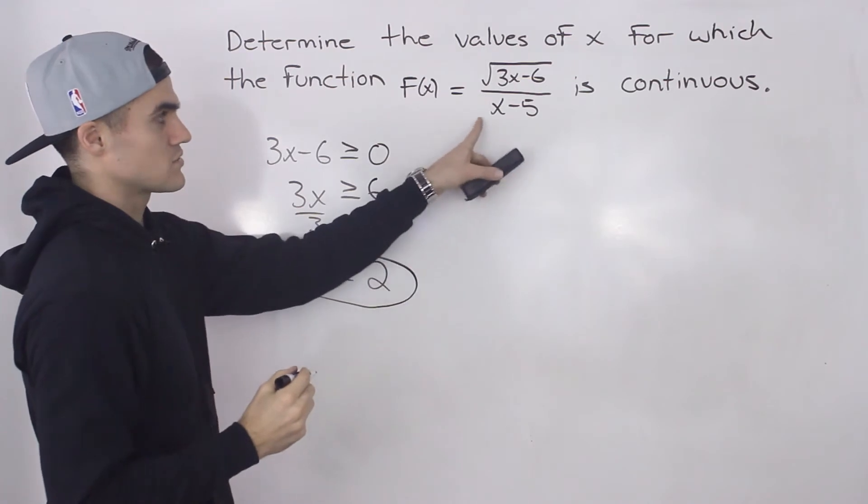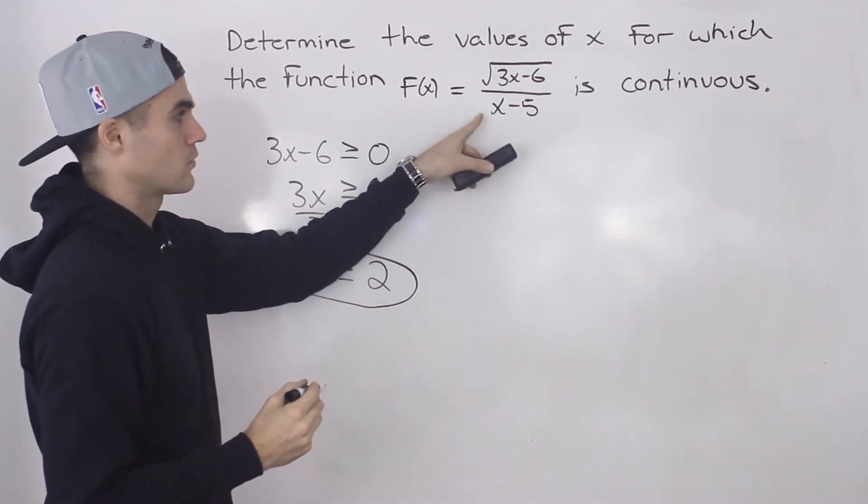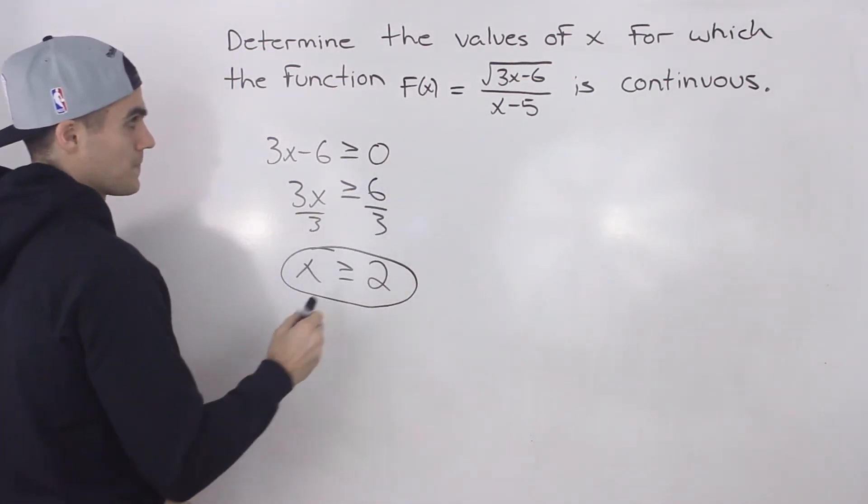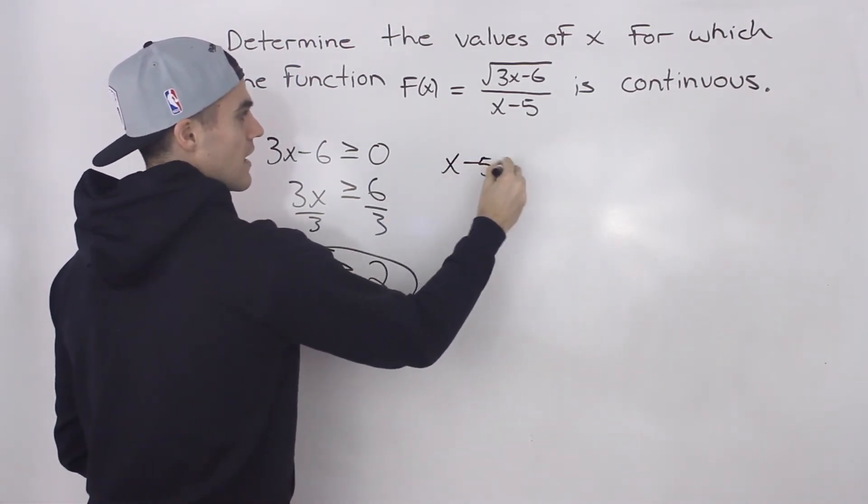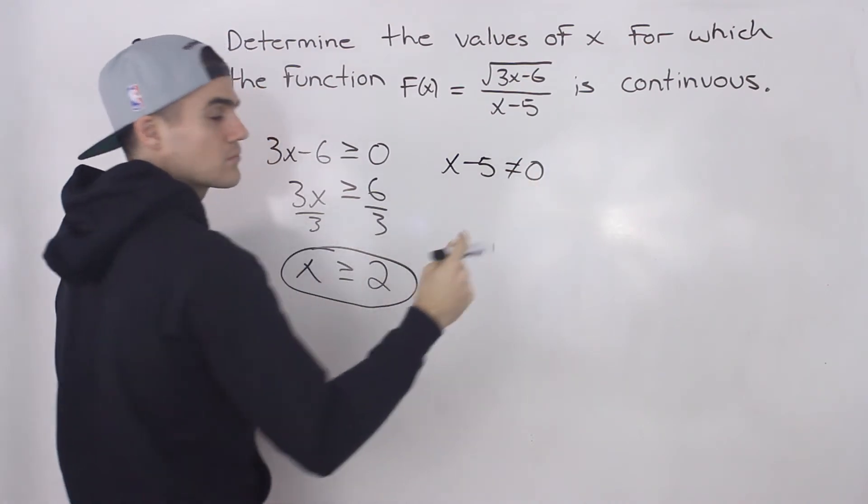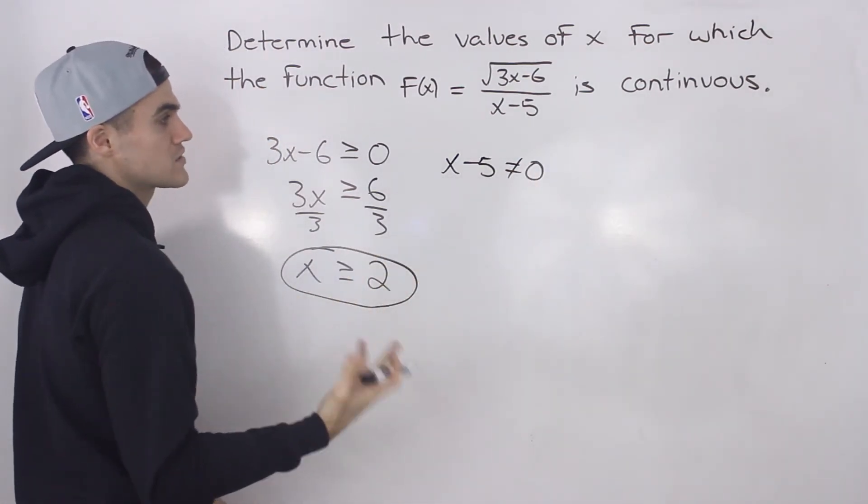However, notice there's also this denominator to work with. So we can't have the denominator equaling zero. x minus 5 can never equal zero because then the function will be undefined as well.